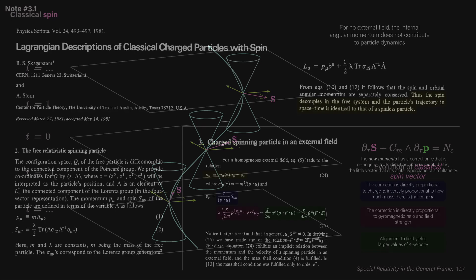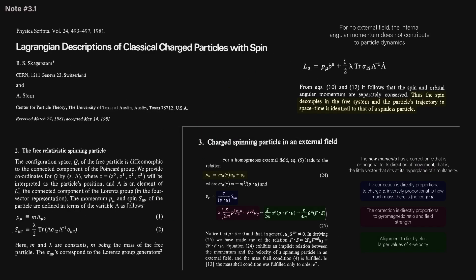Were you to calculate the difference this classical spin makes in regular electromagnetism, it is essentially the same as it does in the Pauli equation in quantum theory, which is a tiny correction, so not very much, but it is there.